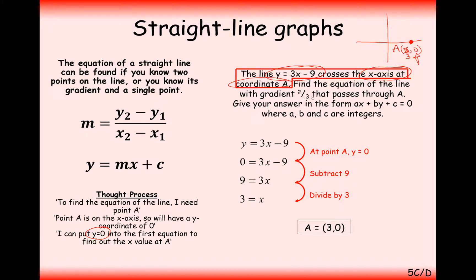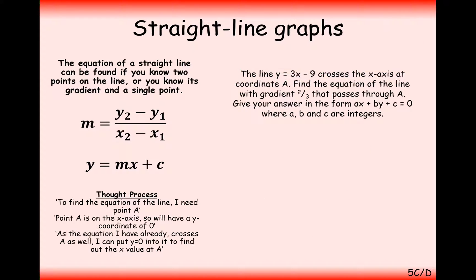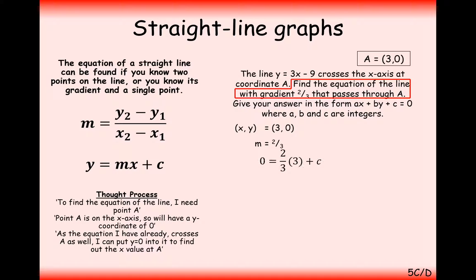Now we find the equation of the line with gradient 2/3 that crosses through coordinate A. We set up y equals mx plus c and substitute in our values: y is 0, m is 2/3, x is 3, plus c. Multiply through by 3 and you get 0 equals 2 plus c, so c equals minus 2.